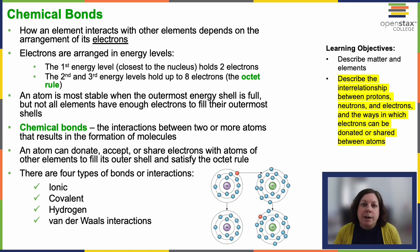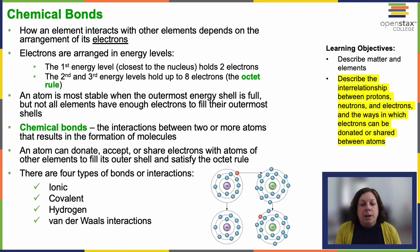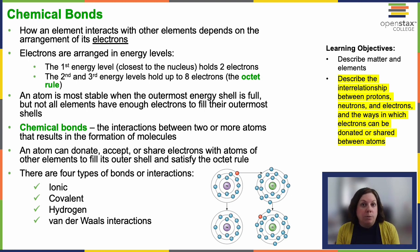Electrons are arranged in what we call energy levels. The first energy level, which is the closest to the atomic nucleus, holds two electrons. The second and third energy levels can hold up to eight electrons. We call this the octet rule — an atom is most stable when its outermost energy shell is full with eight electrons.